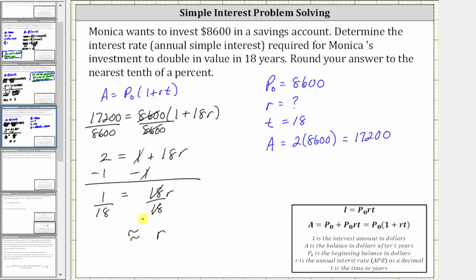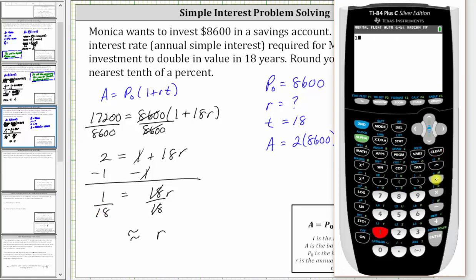But we need to be careful here because we're told to round the percent to the tenths place value, or one decimal place. In the equation, R is in decimal form, which means we'll have to round one divided by 18 to three decimal places. One divided by 18 is 0.5 repeating. Because there's a five in the fourth decimal place, we round up. R is approximately 0.056.